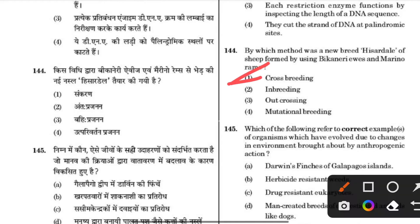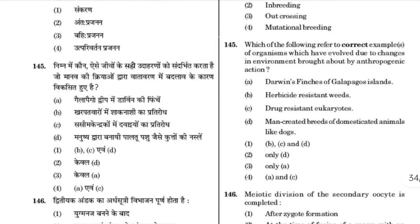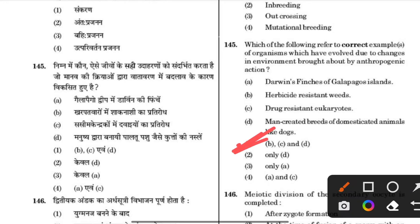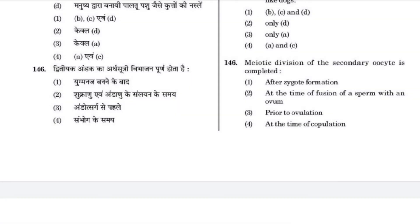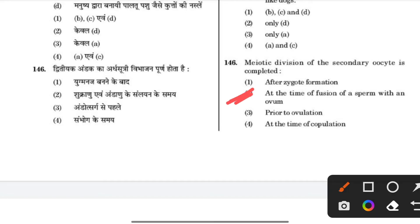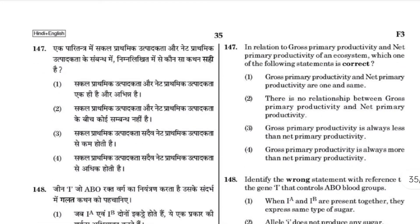A new breed is created by using breeders and marine rams through cross-breeding. Which of the following refers to the correct example of organisms that have evolved due to changes in the environment brought about by anthropogenic action? Herbicide resistance — the answer involves organisms near the division of secondary xylem. Division of secondary xylem is completed after gamete fusion.